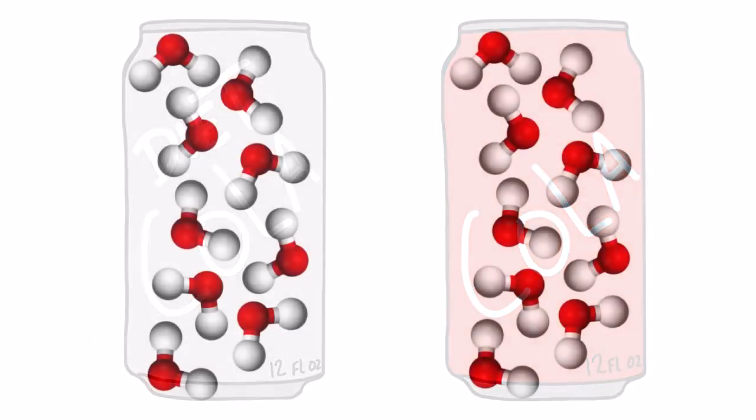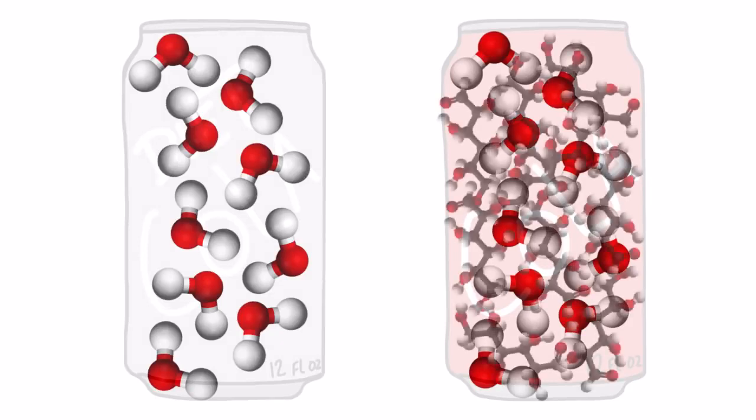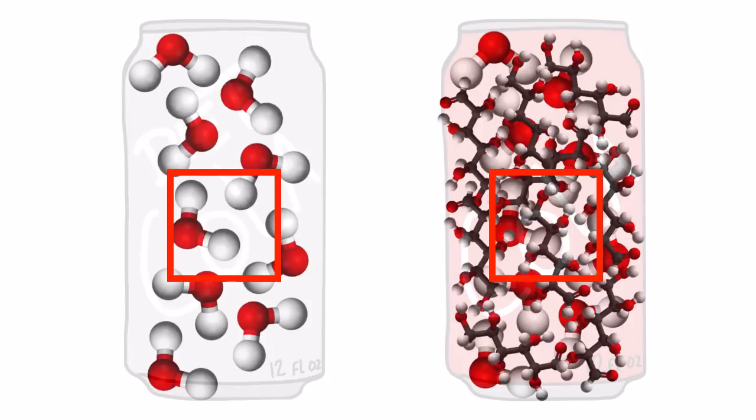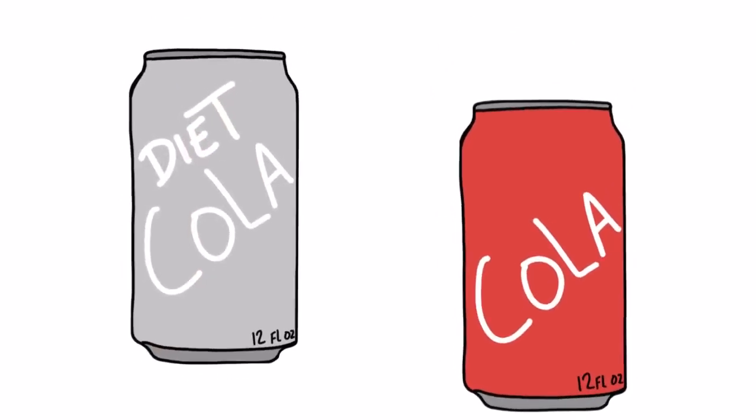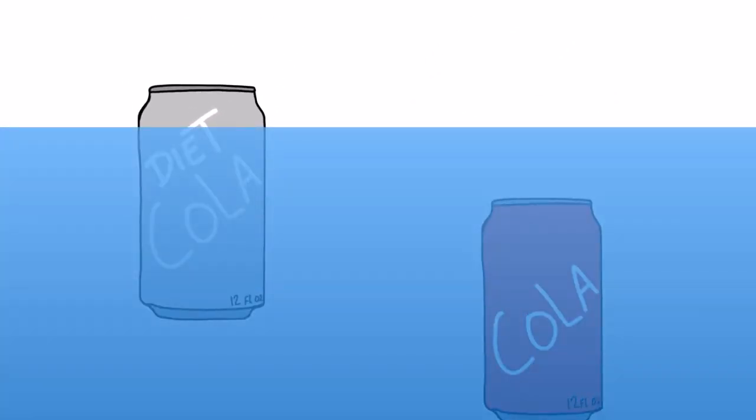The main ingredients in cola are carbonated water and sugar. So each can has the same amount of water molecules, but in the same space, the regular cola has additional molecules from the sugar. Putting more atoms in the water forces the molecules to be more dense, making the cola sink.